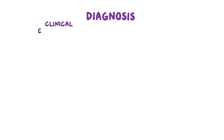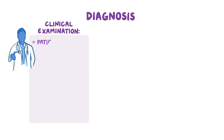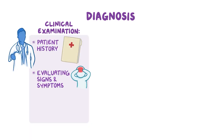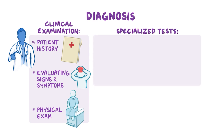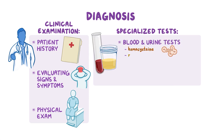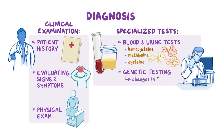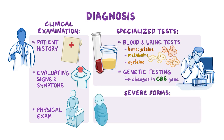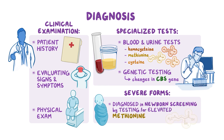Classical homocystinuria is diagnosed through a clinical examination, which includes taking a patient history, evaluating signs and symptoms, and a physical exam. If homocystinuria is suspected, a variety of specialized tests will be conducted, including blood and urine tests for homocysteine, methionine, and cysteine levels, and genetic testing for changes in the CBS gene. More severe forms can be diagnosed in a newborn screening by testing for elevated methionine levels.